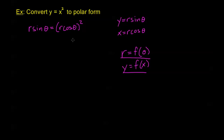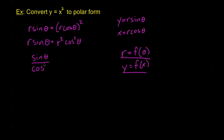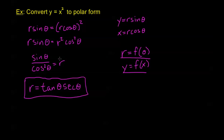Continuing on — we want r on the left side and some function of theta on the right, with no r's on the right. Distributing the power on the right gives r sine theta equals r squared cosine squared theta. Dividing both sides by r and by cosine, I get sine theta over cosine squared theta equals r. Putting r on the left: r equals sine over cosine times one over cosine, which simplifies to r equals tangent theta times secant theta. That's our polar form of y equals x squared.